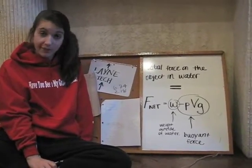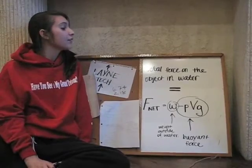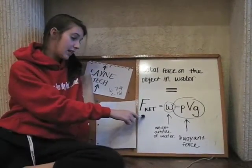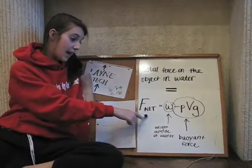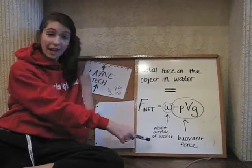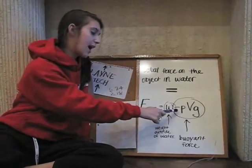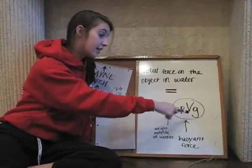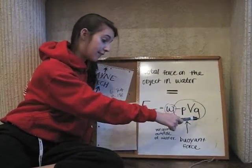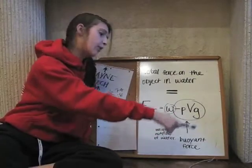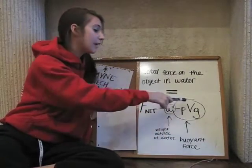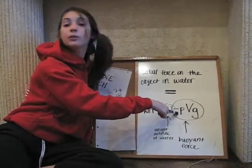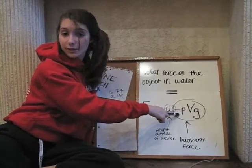In order to find the water weight of an object, you find the total force on the object in water. You set up an equation: F-net equals W, which is the weight outside of water, minus PVG. P stands for density, V for volume, and G for gravity. This all represents the buoyant force. Note that there's a negative sign, meaning it's moving in the opposite direction of gravity.